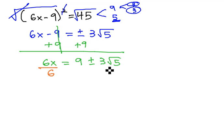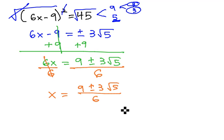And then we'll divide both sides by 6 to get the x alone, and x equals 9 plus or minus 3 root 5 over 6.